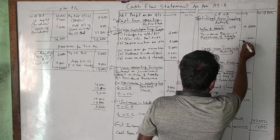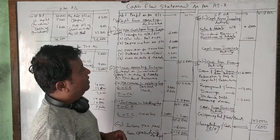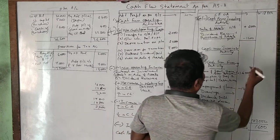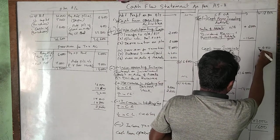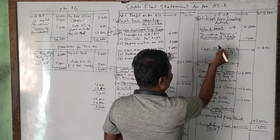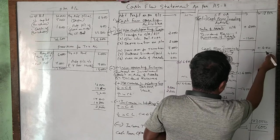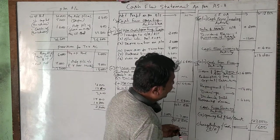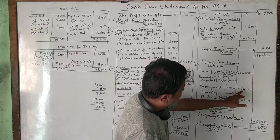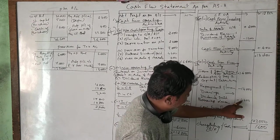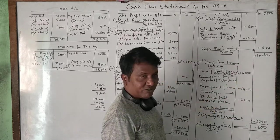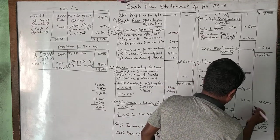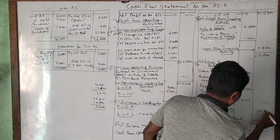Checking cash from investing activity: sale of land and building is plus 2,000, purchase of machinery is minus 1,600, so net investing activity is plus 400. For financing activity, there is minus 18,600 and minus 4,600 dividend paid, but adjusting the share capital component, the net financing activity comes to minus 14,600.